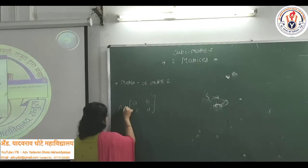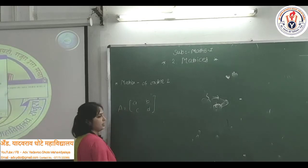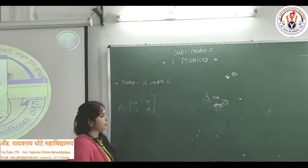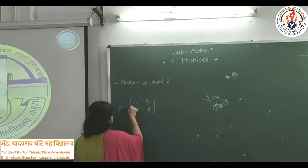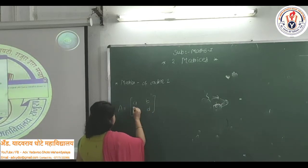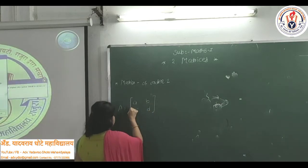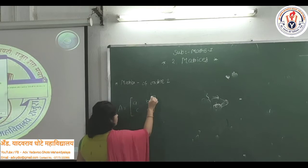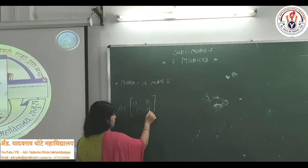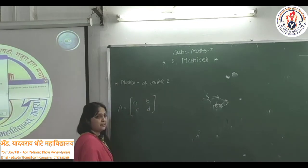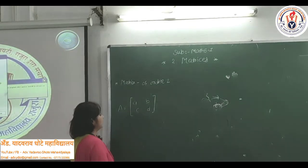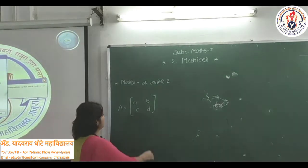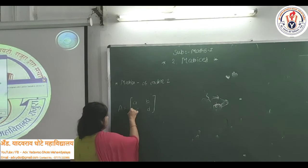Matrices are always denoted by capital letters. Therefore, matrix A is equal to [a, b, c, d]. Here, the elements a, b, c, d are called as elements of a matrix, and they are enclosed within a square bracket.